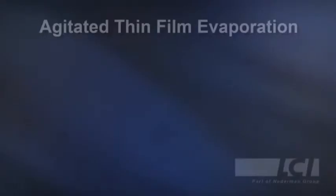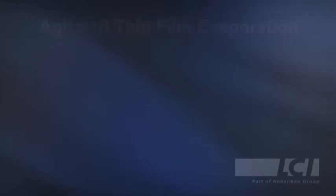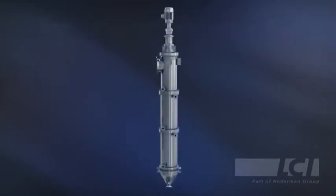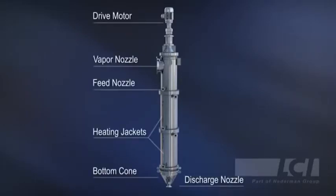Hi everyone, I'm D-Guan Hong. I'm going to present the process of our equipment, Agitated Thin-Film Evaporator. I will show how this equipment works and how it flows. The main parts of the evaporator include the drive motor, vapor nozzle, feed nozzle, heating jacket, bottom cone, and discharge nozzle.